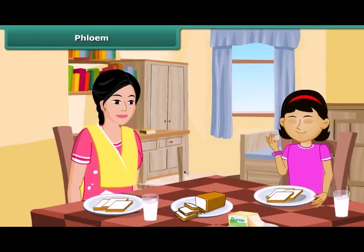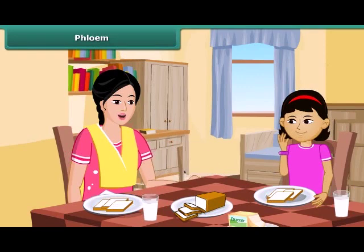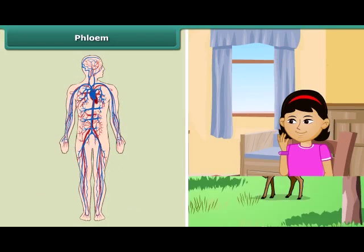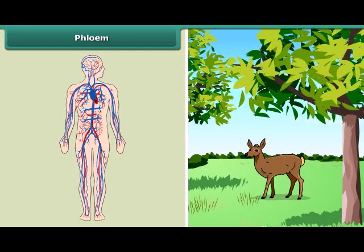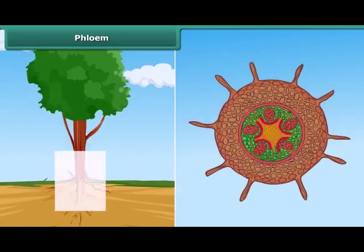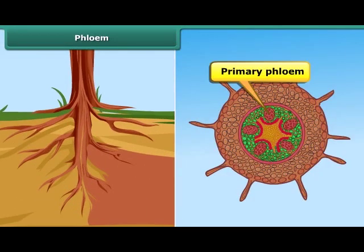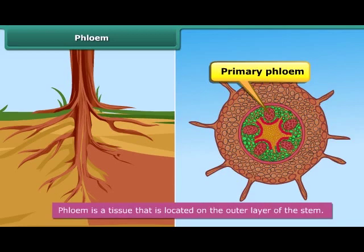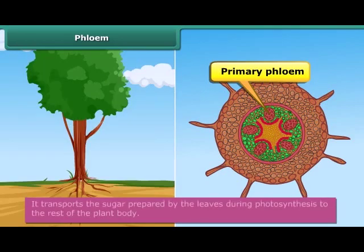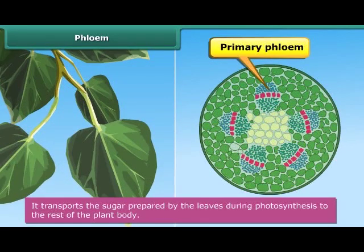Rhea is eating her breakfast in a hurry. Her mother advises her to chew the food properly so that the nutrients are absorbed by the body. Human beings and animals have a circulatory system that transports the nutrients absorbed from food to the different parts of the body. Plants have phloem to perform this task. Phloem is a tissue that is located on the outer layer of the stem. It transports the sugar prepared by the leaves during photosynthesis to the rest of the plant body.